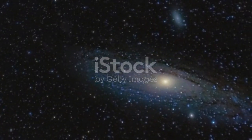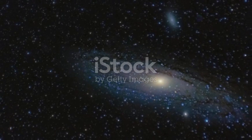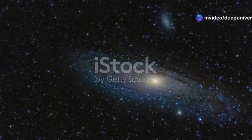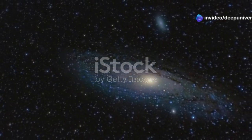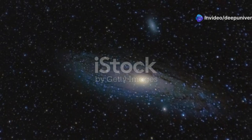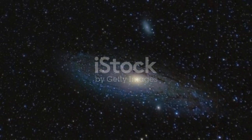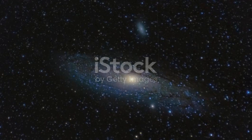Andromeda is about 2.5 million light years away from us. To put that into perspective, a light year is the distance light travels in one year, which is about 5.88 trillion miles. So Andromeda is approximately 14.7 quintillion miles away from Earth.